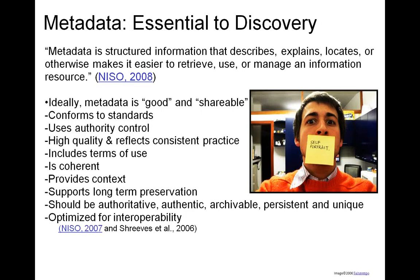Let's start by talking about metadata. Metadata is essential for organizing and providing greater access to information resources, and this is particularly true as libraries make their collections increasingly available on the web. For the purposes of today's discussion, we've adopted NISO's definition of metadata as structured information that describes, explains, locates, or otherwise makes it easier to retrieve, use, or manage an information resource. Metadata is critical to providing access to the wide variety of resources populating institutional repositories.